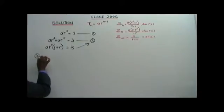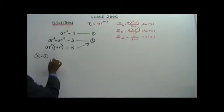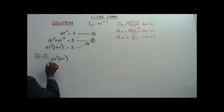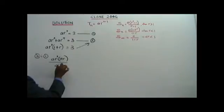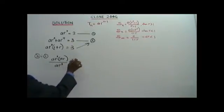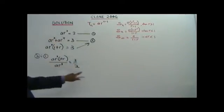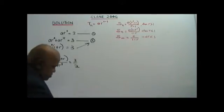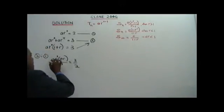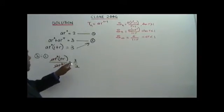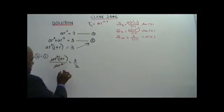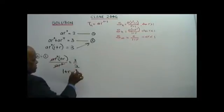Equation 2 divided by Equation 1: A·R³(1 + R) over A·R³ equals 3 over 2. You cancel the common factors A·R³, and what you get is 1 plus R equals 3 over 2.